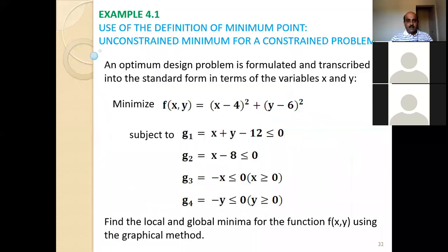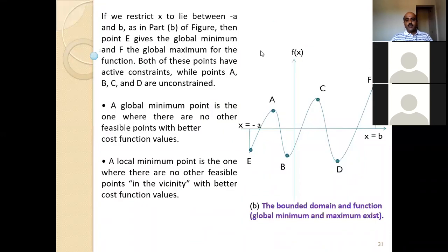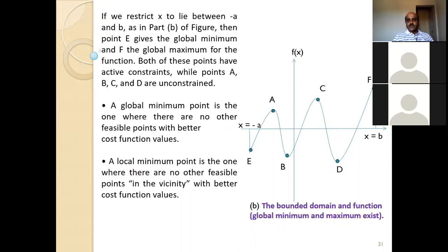So this is the definition and the important things. Any clarification from anyone? These definitions are very simple and very important statements for local and global minima. Next, I will take you through one simple problem. For that I need you to have a pencil, scale, and a graph sheet if possible; otherwise you can have a plain sheet of paper and later transfer it to the graph sheet. You can unmute yourself and we can have a discussion.